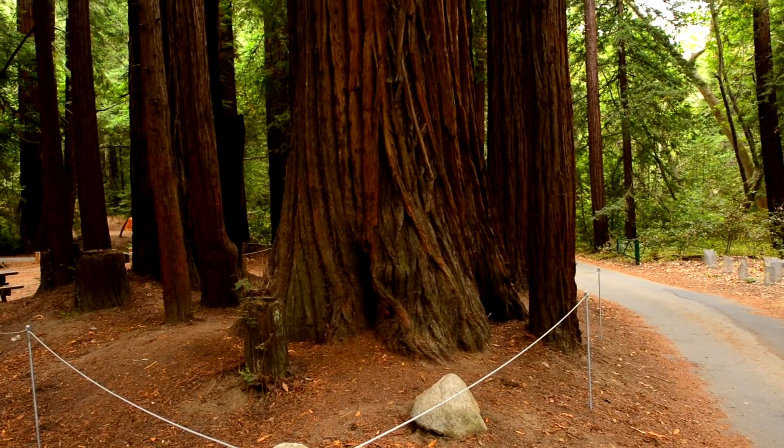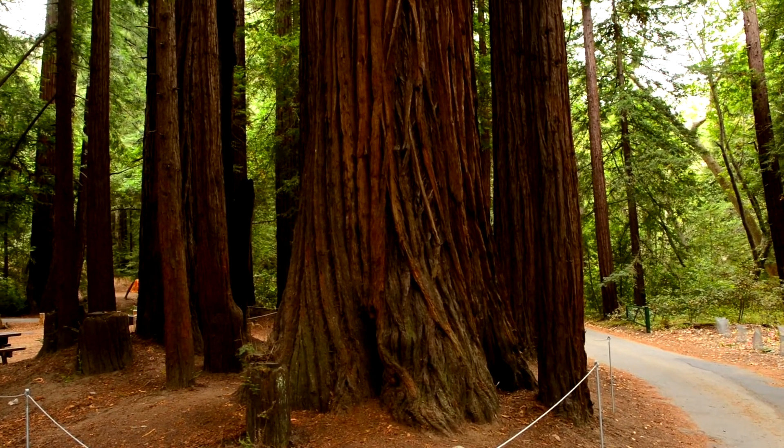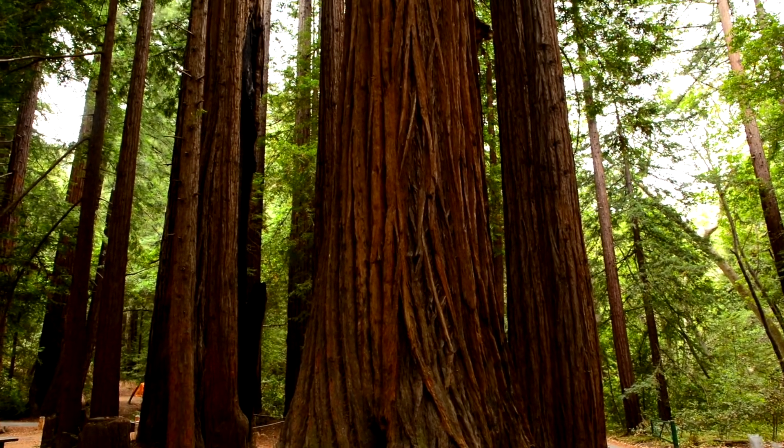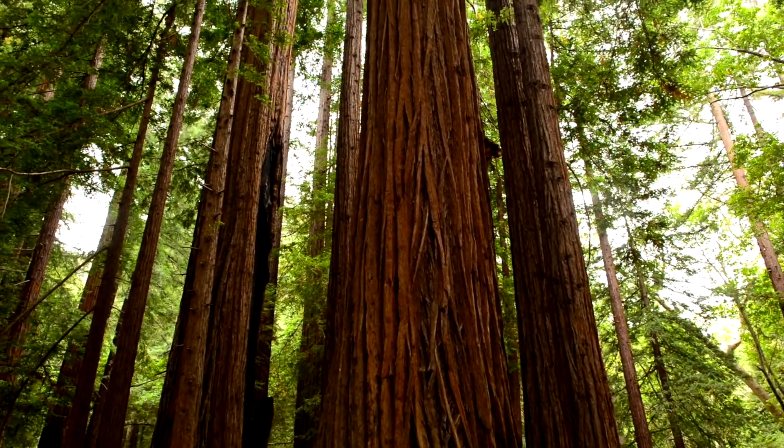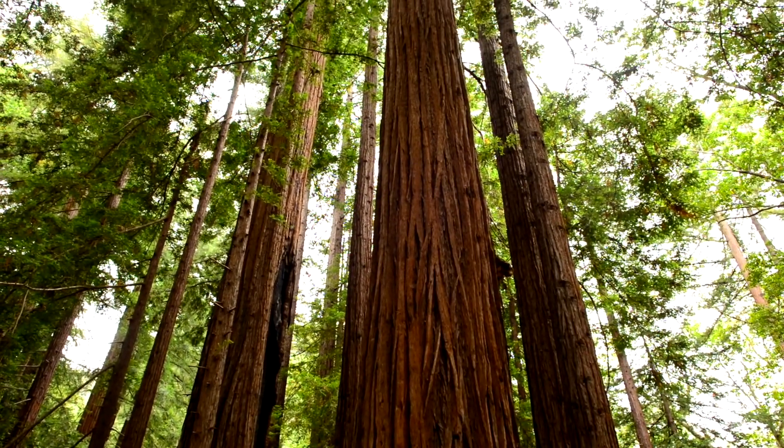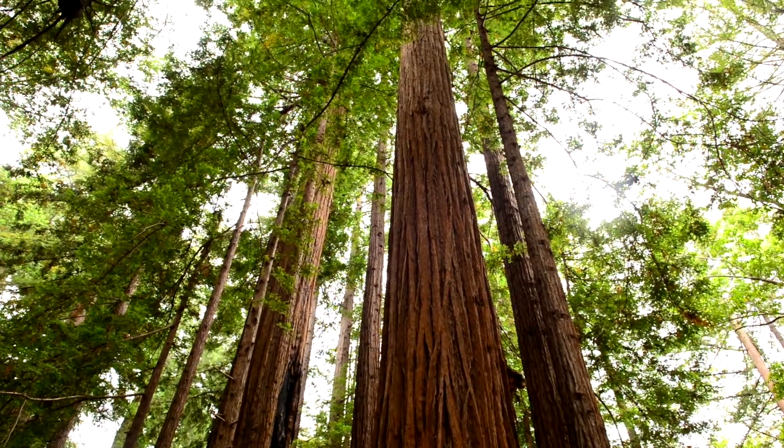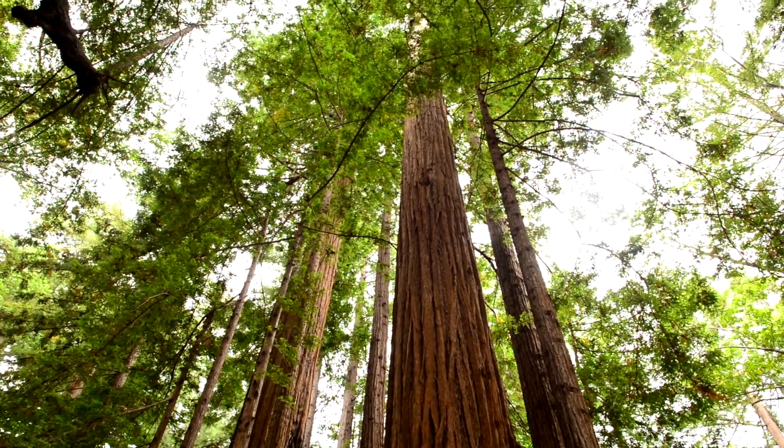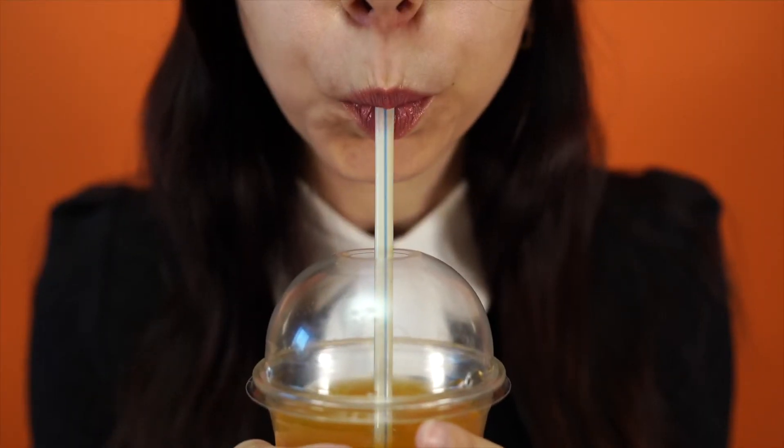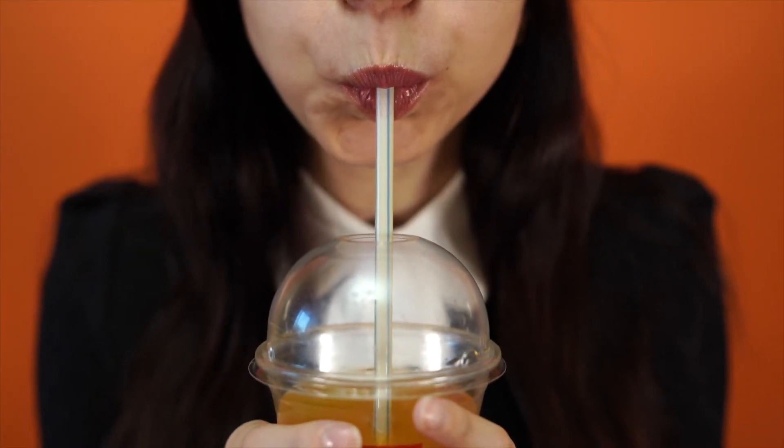The stem, or trunk, is the plant's support system, and the vascular tissue transports water and nutrients through here. Have you ever wondered how really tall trees, like the giant sequoias, get water all the way to the top?